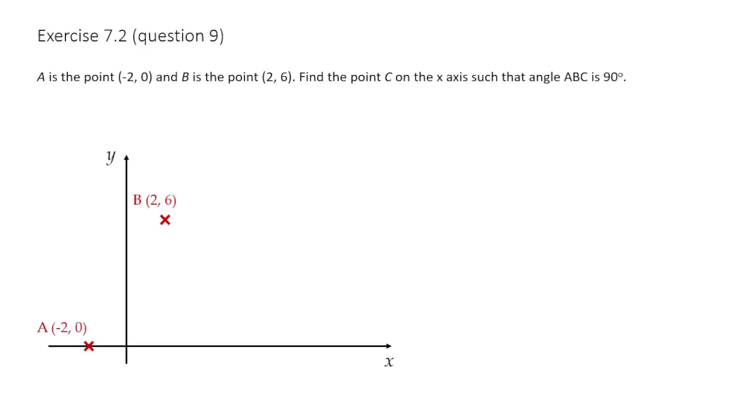So let's plot the point A here, which is negative two zero and the point B, which is two six. That should be fairly clear. This doesn't have to be super accurate, just a rough sketch.